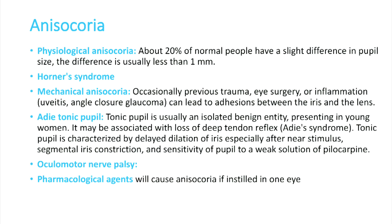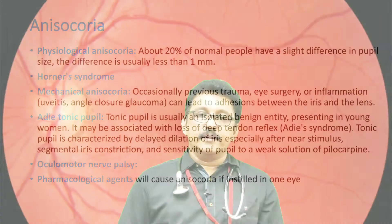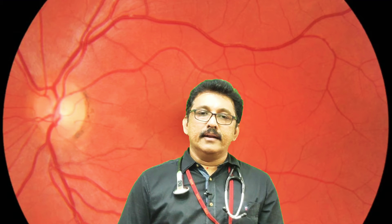Physiologically, anisocoria can be seen in 20% of normal individuals — a difference of less than one millimeter. This is physiological anisocoria. Classically, anisocoria is described in two important conditions: third nerve palsy, which causes dilated pupils, and Horner's syndrome, which causes constricted pupils. Other causes include mechanical anisocoria from problems inside the eye, tonic pupil, pharmacological agents such as dilating drops used in ophthalmology, and head injury.